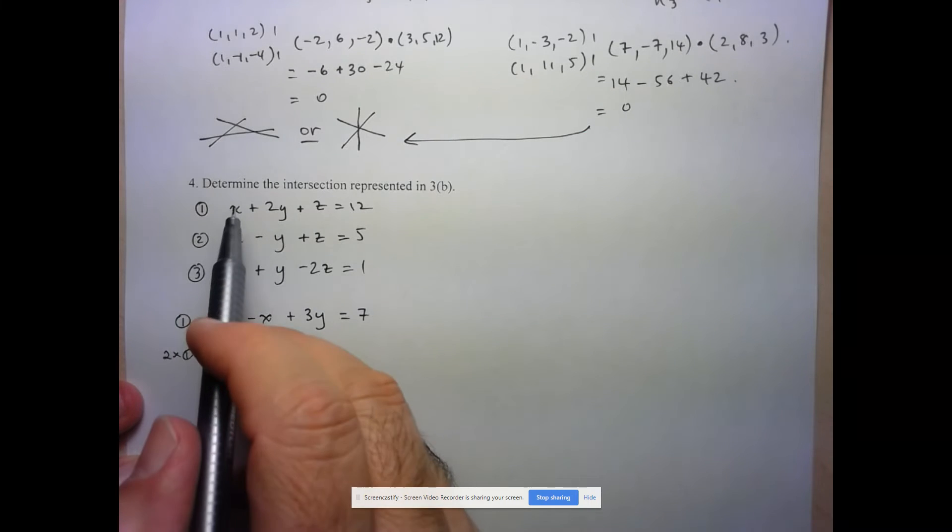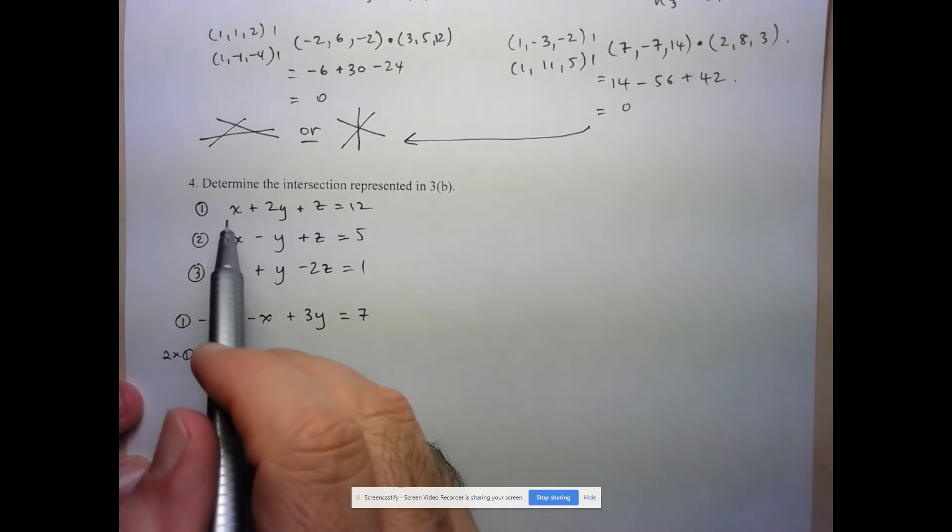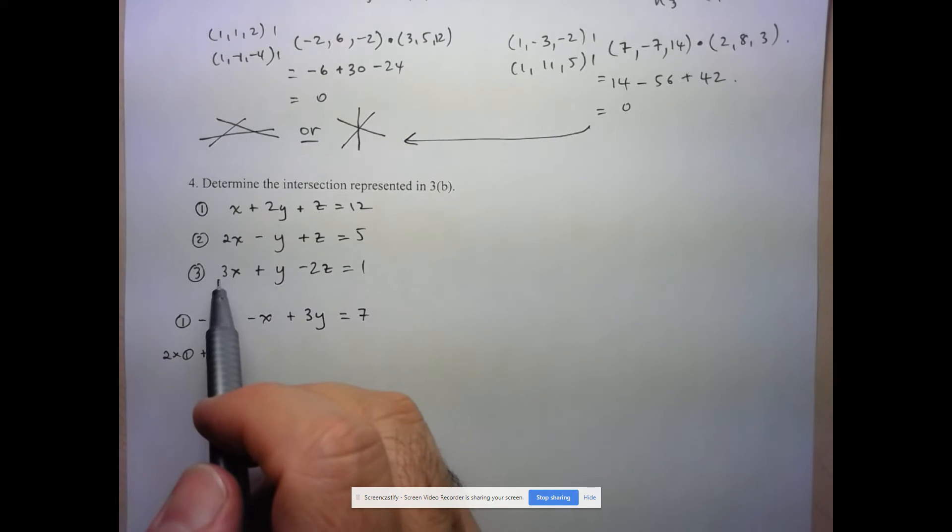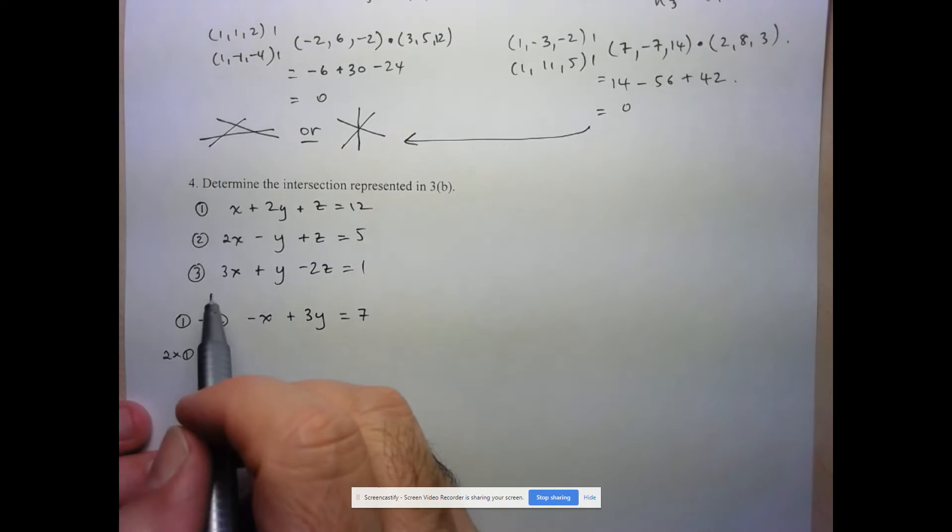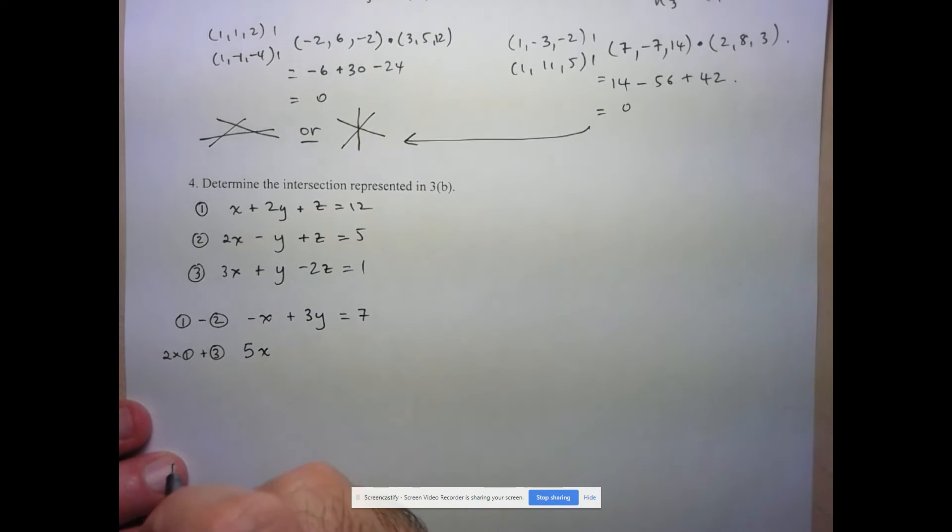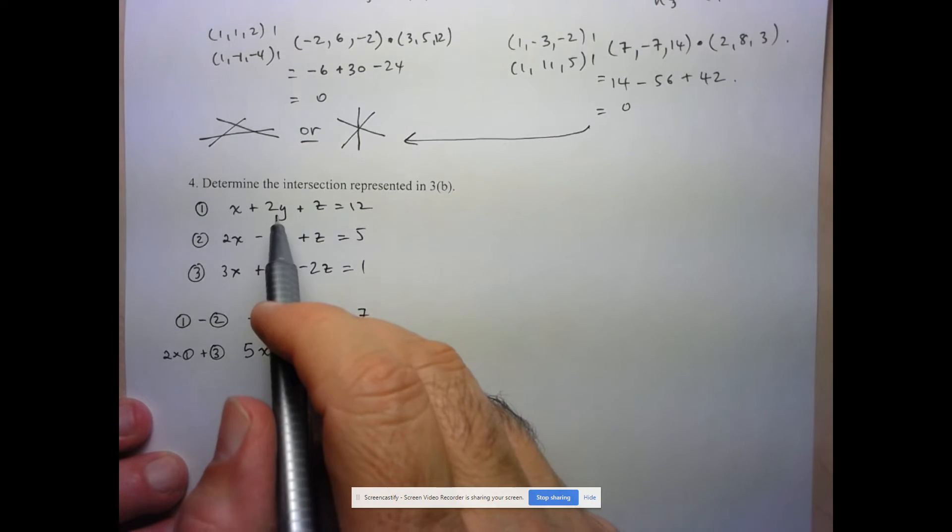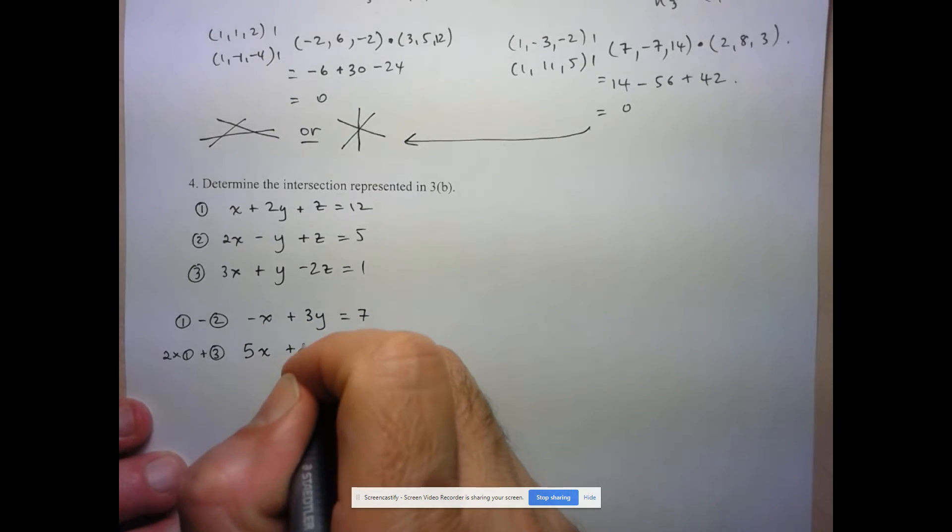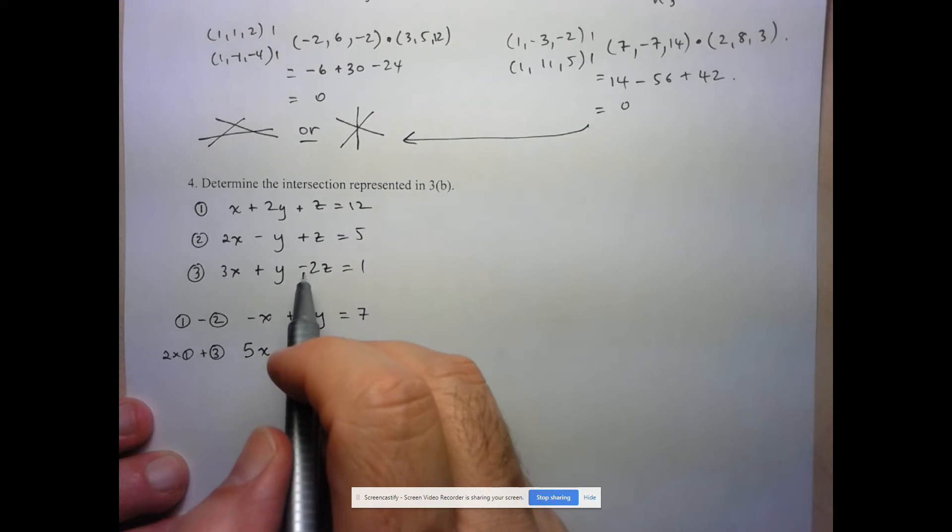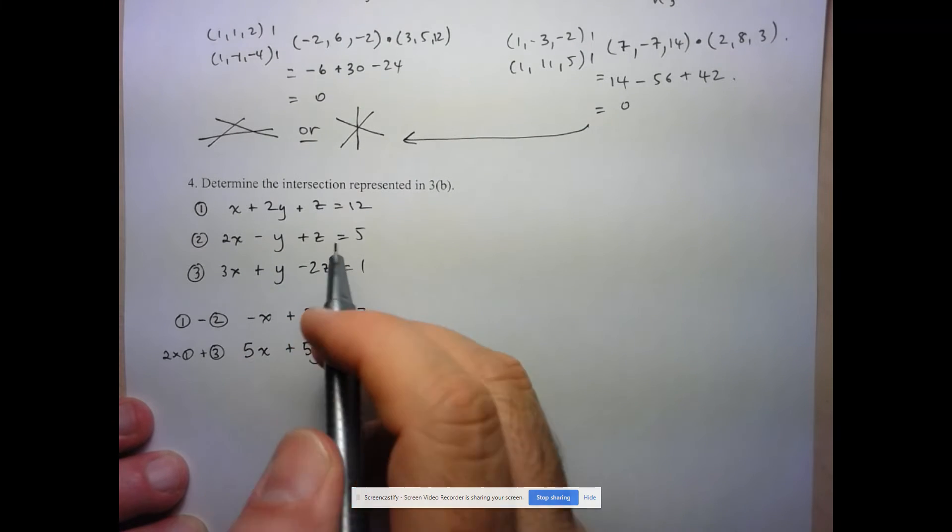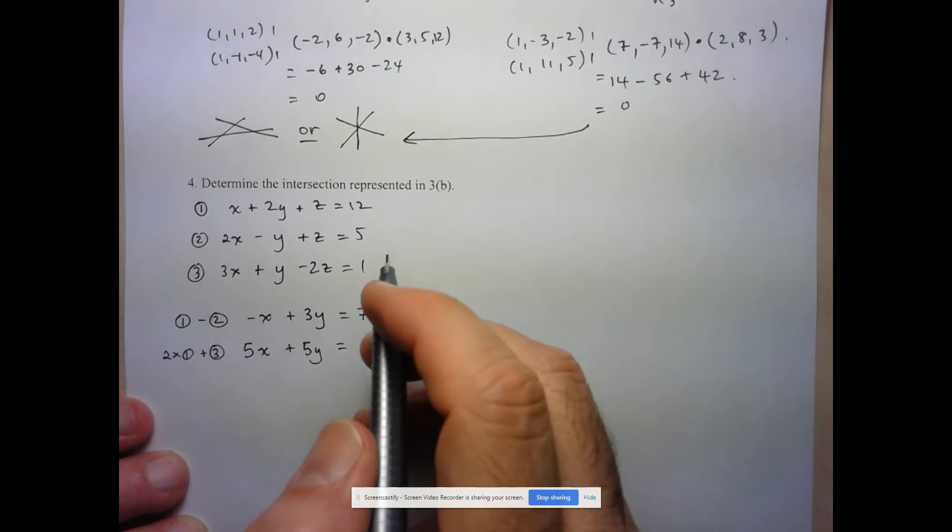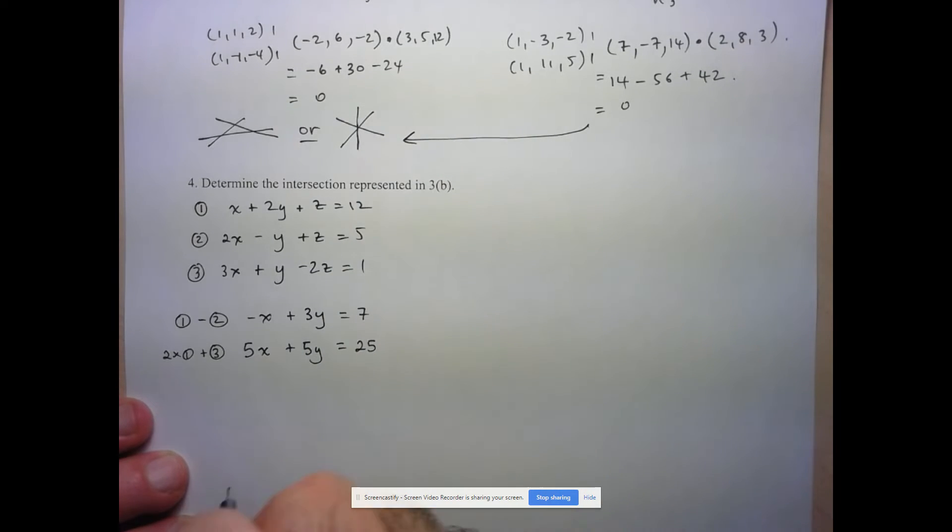All right, so let's see what I get here. So 2x, because I'm multiplying by 2. So 2x plus 3x is going to be 5x. Remember, we're adding the equations. And then let's look at the y. So 2 times 2 is 4 plus 1, that's another 5y. Here, this is going to become 2z plus negative 2z. They're going to cancel out as expected. And here, 2 times 12 is 24 plus 1 is 25.